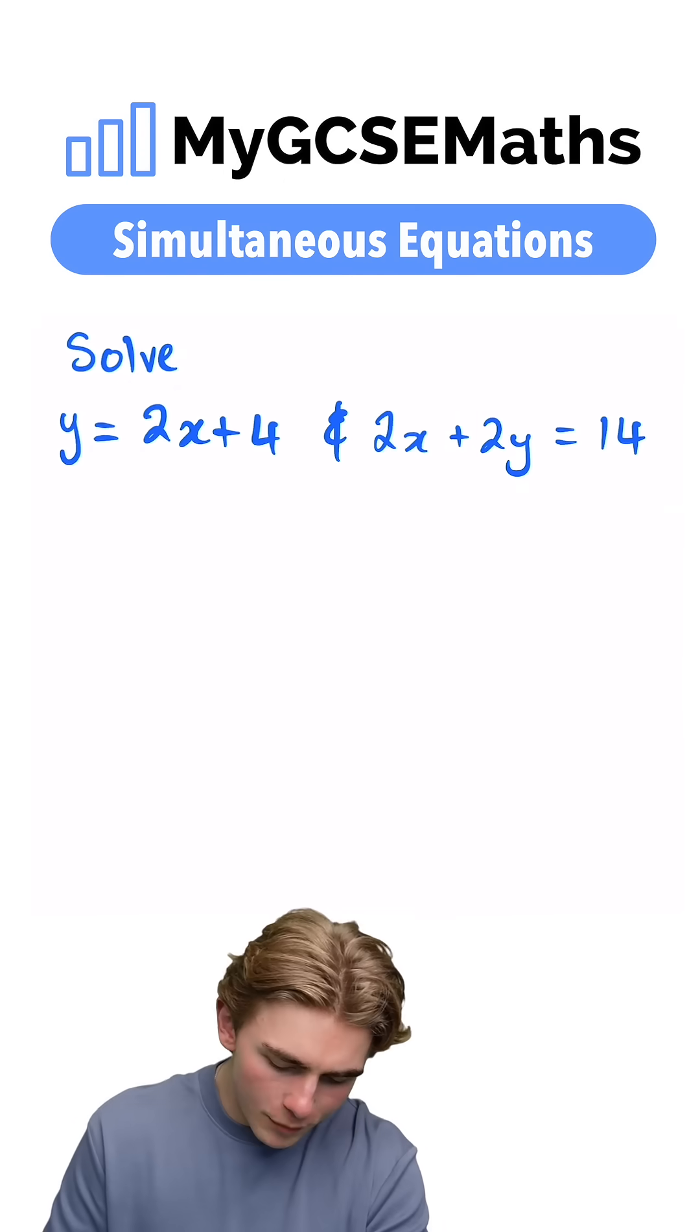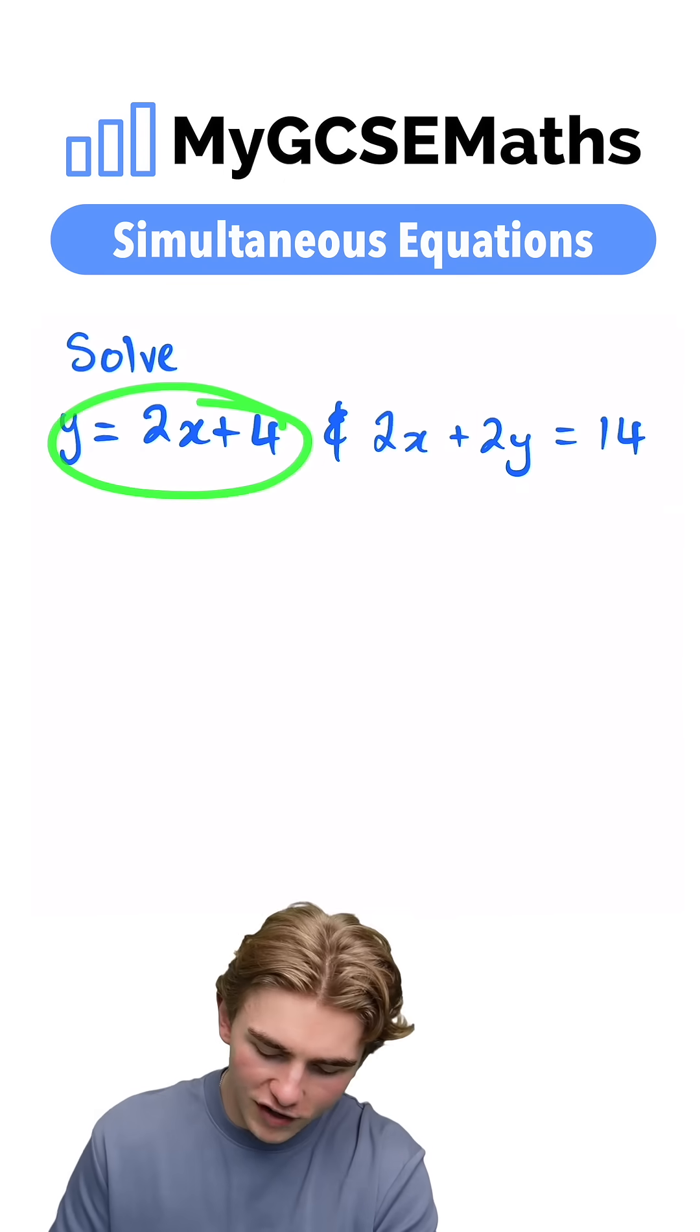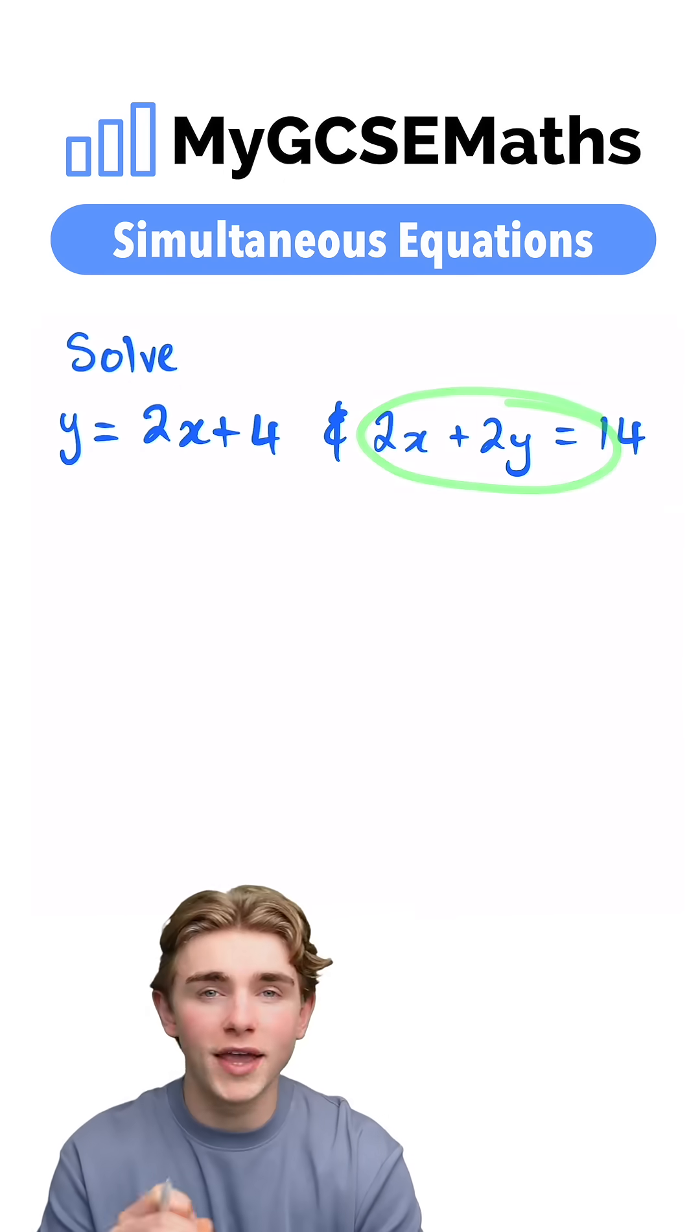Let's say we want to solve these two simultaneous equations here. Y equals 2x plus 4 and 2x plus 2y equals 14.